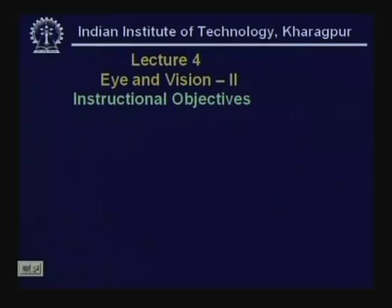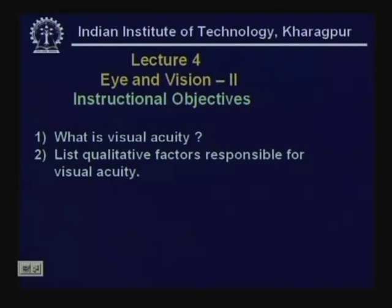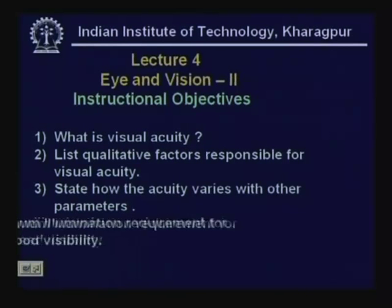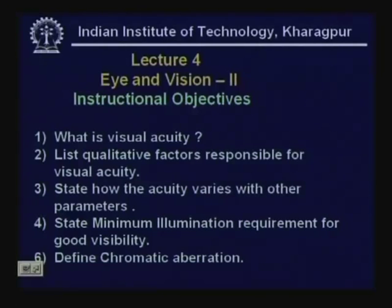The instructional objectives for this lesson are: 1) what is visual acuity; 2) list qualitative factors responsible for visual acuity; 3) state how the acuity varies with other parameters; 4) state the minimum illumination requirement for good visibility and define chromatic aberration.